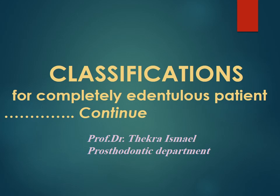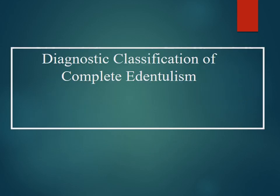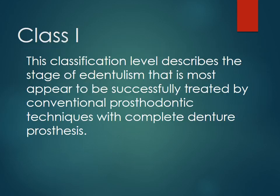Classifications for the Completely Edentulous Patient. We continue with the second lecture. The Diagnostic Classification of Complete Edentulous Class 1 describes the stage of edentulism most amenable to successful treatment by conventional prosthodontic techniques with complete denture processes.